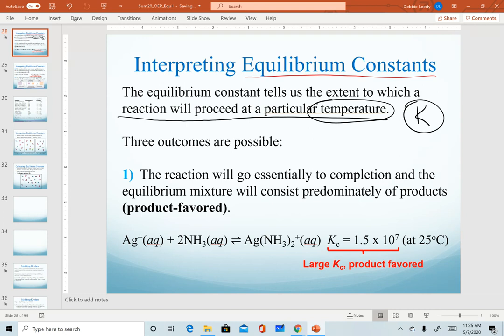So we have three possible scenarios. The first one is a reaction will go essentially to completion, and the equilibrium mixture will consist predominantly of products. And if we think of our setup, we know that equilibrium constants are written as products over reactants. Realize that if I have more products in my container at equilibrium, I'm going to end up with a larger value.